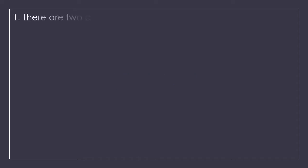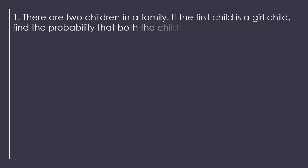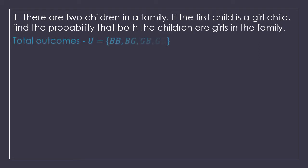Question number 1. There are two children in a family. If the first child is a girl-child, find the probability that both the children are girls in the family. This is a pretty standard question. Before we start with actually answering the question, let us write down the sample space or the total outcomes of this event. Total outcomes would be: both could be boys, boy and girl, girl and boy, and both could be girls. So the total outcomes for this question are 4.